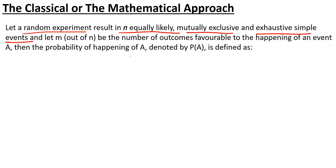For example, if we throw a die and we say the number 2 appears, that is a simple event. But if we say an even number appears, it could be 2, 4, or 6 — three different values — that is a compound or composite event. We will focus on simple events, where every event has a single outcome.